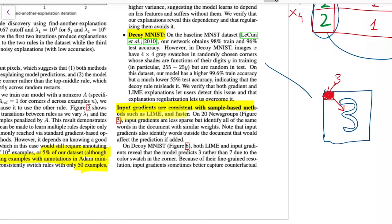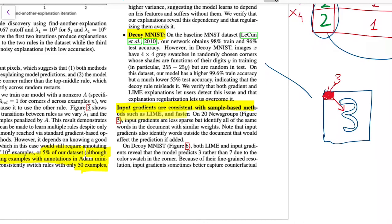For the decoy MNIST, they take the standard MNIST digit dataset and add a random patch to all training inputs whose value is directly correlated with the actual digit label. At test time, the patch is absent. Without their method, the model learns to recognize digits based on the patch — resulting in near-random accuracy at test time. By annotating the patch pixels as irrelevant using Method 1, the model recovers high accuracy, showing it learns to ignore the spurious patch and focus on the actual digit.